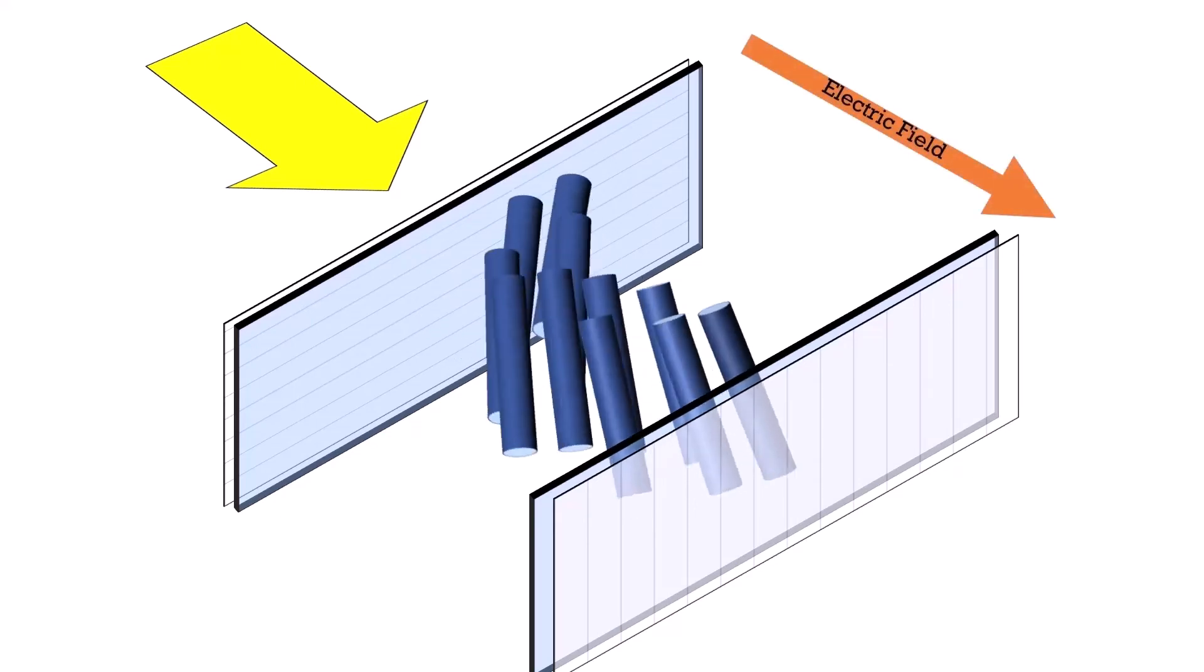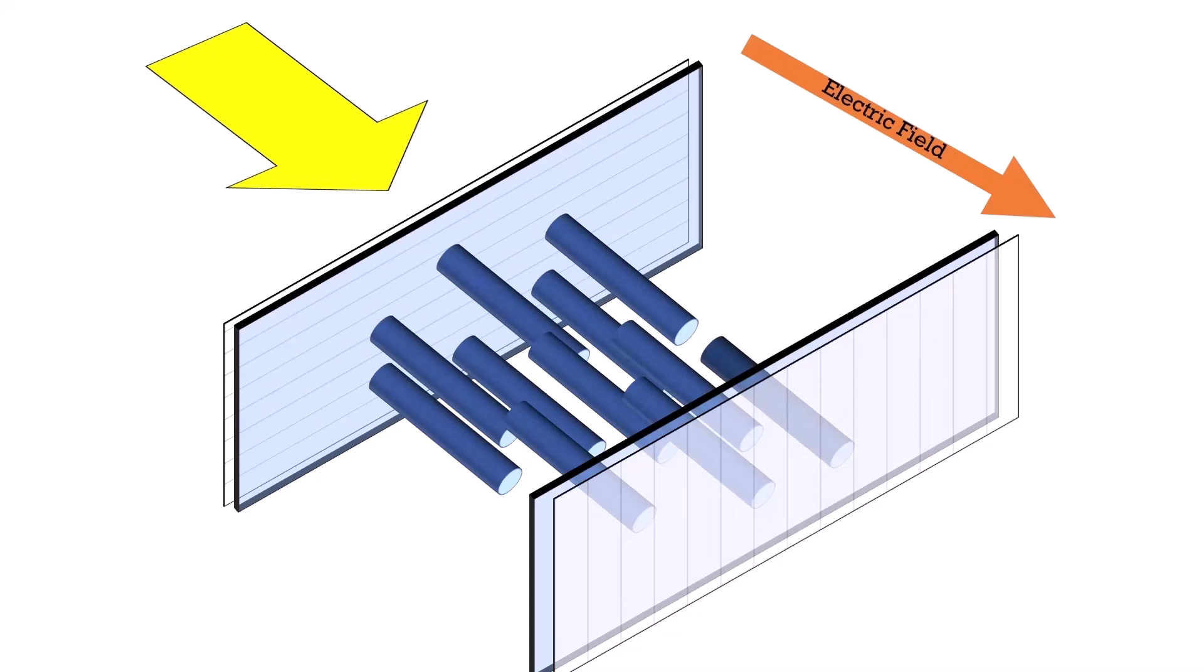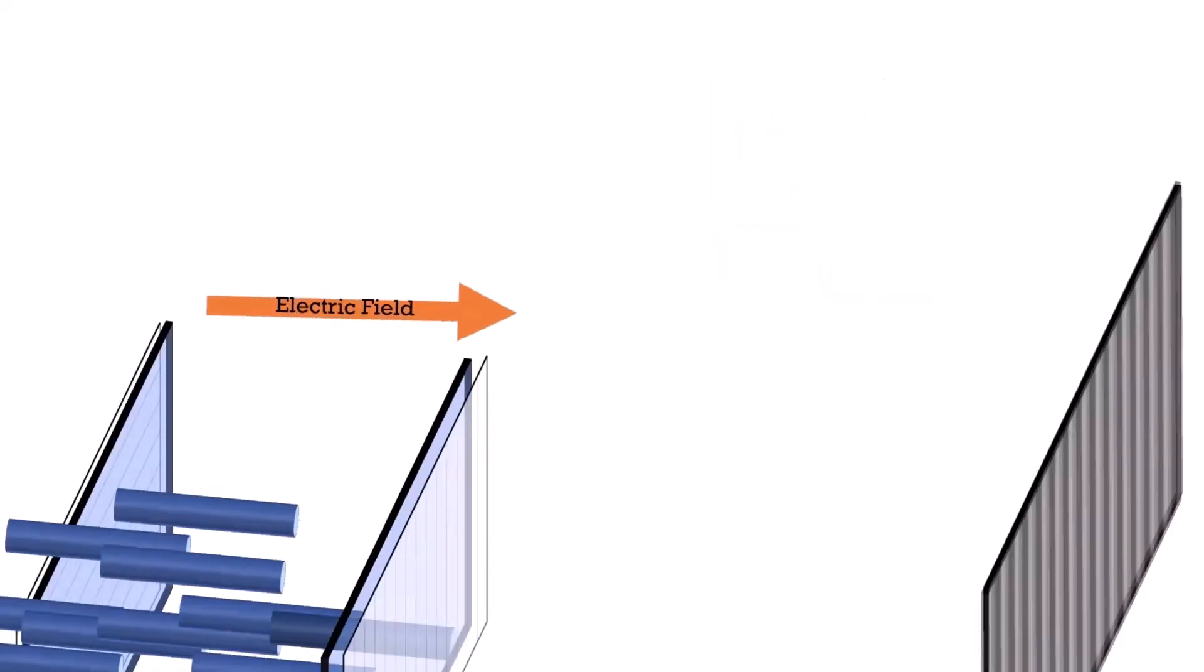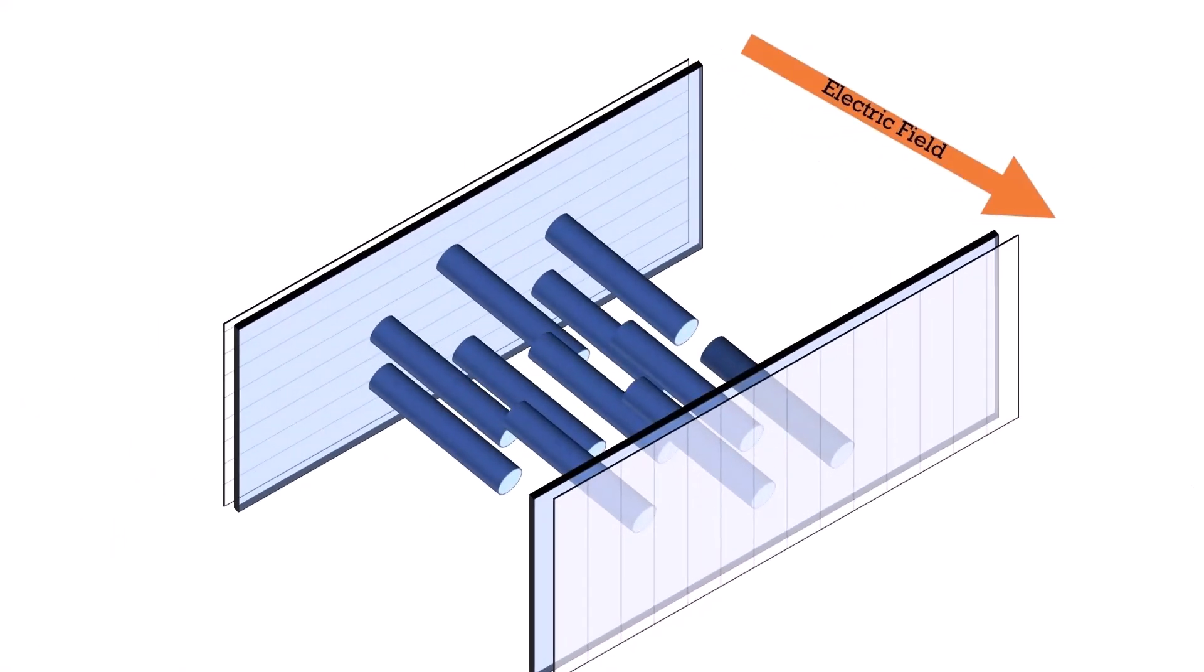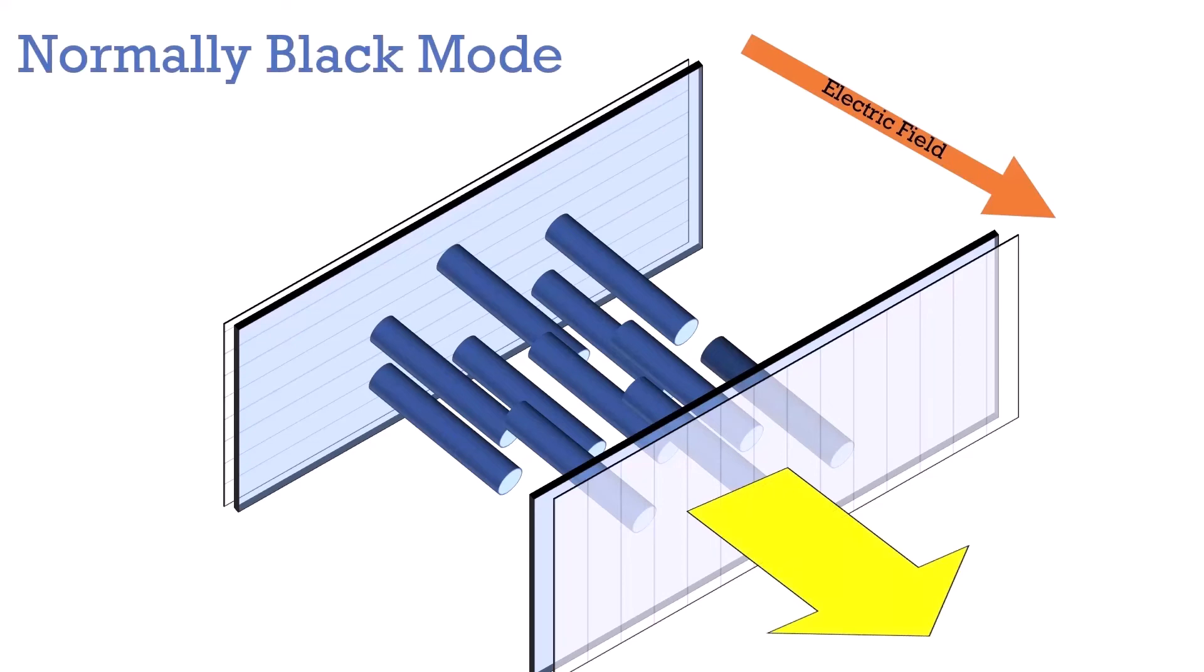If we pass electricity through our filter, we can cause our crystals to align themselves lengthwise, entering what is called the pneumatic crystal phase. Now light will not be rotated, and therefore it won't be aligned to pass the vertical polarizer, meaning no light will come out of the pixel. When no light is rotated, this is called the normally black mode.